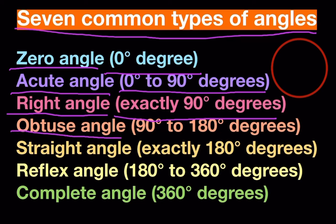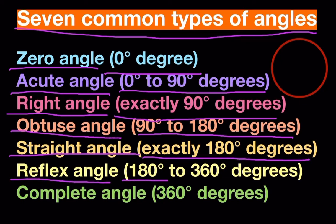Obtuse angle, 90 to 180 degrees. Straight angle, exactly 180 degrees. Reflex angle, 180 to 360 degrees. Complete angle, 360 degrees.